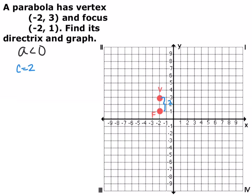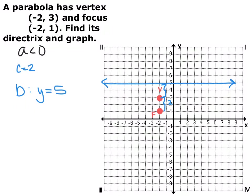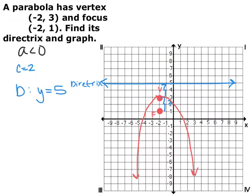So the distance between the vertex and the directrix is also going to be 2 in the opposite direction, meaning the directrix is going to be at y equals 5. The vertex is always in between the focus and the directrix. Since the focus was 2 spots below the vertex, the directrix had to be 2 spots above the vertex. Then I just draw a downward facing parabola to match this — that's the final answer.